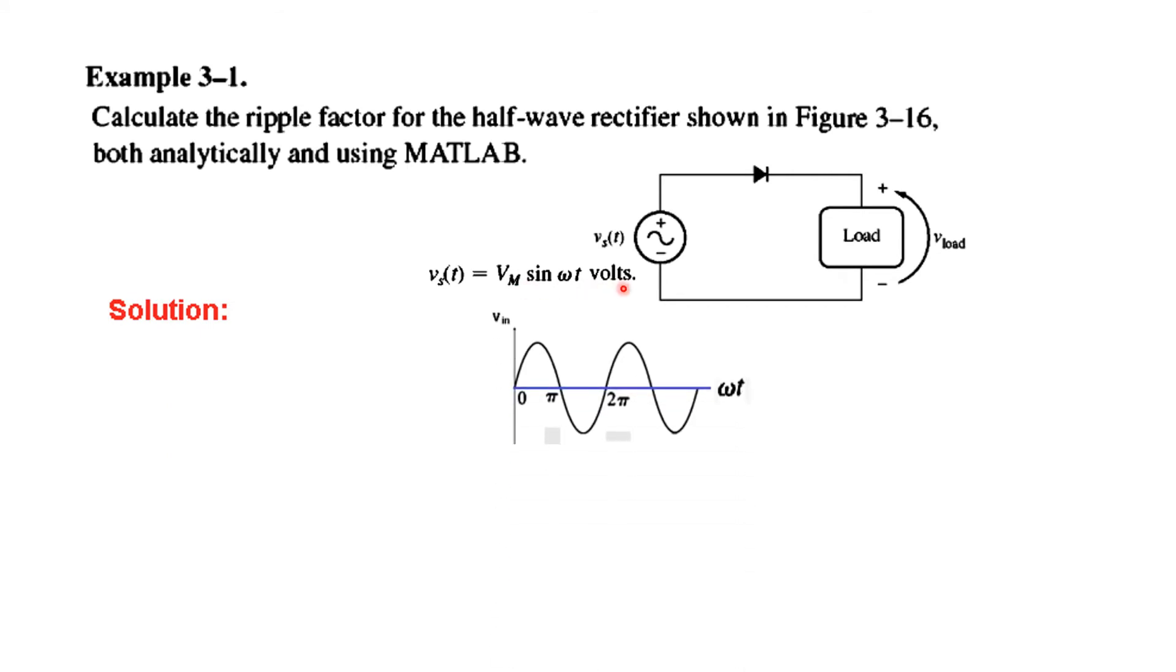Okay, now the input is Vm sin omega T. We can draw it like this. And the output will be obviously rectified. So positive half, and then negative is eliminated. So this is the output part, or the Vload part. Now, this output can now be written in mathematical form. Vload is equal to, this is same as input, and input is Vm sin omega T. So we can say it as Vm sin omega T. But this is valid from 0 to pi. So when omega T is between 0 and pi, this is valid. But between pi and 2 pi, the signal is 0. So we will write 0 for omega T between pi and 2 pi. So this is how we have defined the output signal, or the rectified signal.